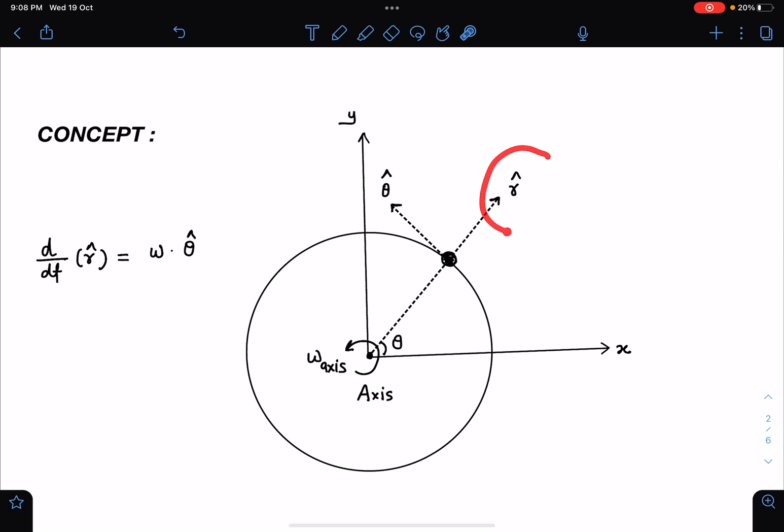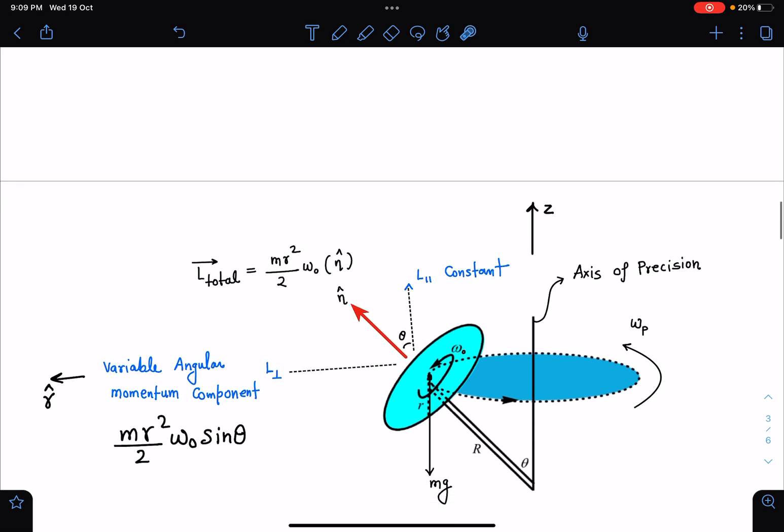If I differentiate d by dt of r cap, I get omega theta cap. Omega will be about this axis, which is coming outside. We are going to use these polar coordinates in 3D rotations. They will bring a lot of ease and make our calculations very normal compared to the traditional methods.